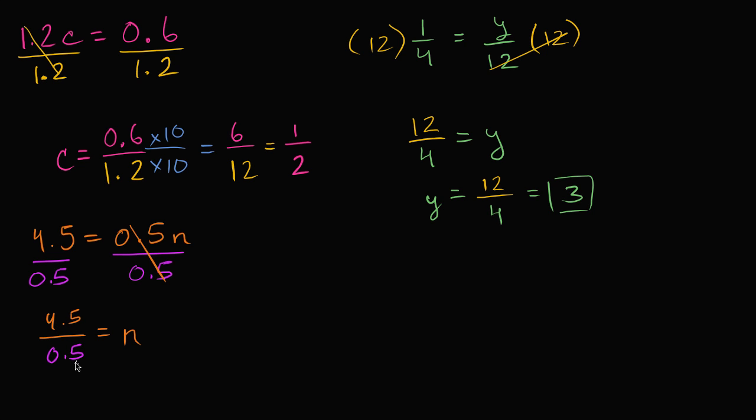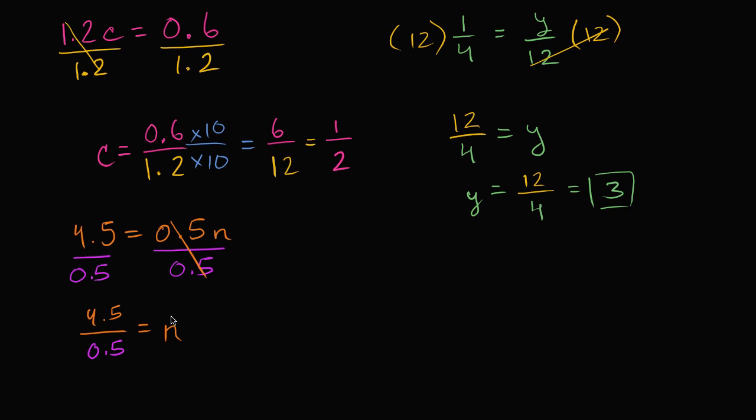Well, 4.5 divided by 0.5, there's a couple of ways to view this. You could view this as 45 tenths divided by 5 tenths, which would tell you that's just going to be 9. Or if that seems a little bit confusing or a little bit daunting, you could do what we did over here. We could multiply the numerator and denominator by the same number so that we get rid of the decimals. And in this case, you multiply by 10, you can move the decimal 1 to the right.